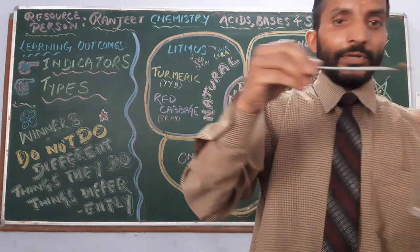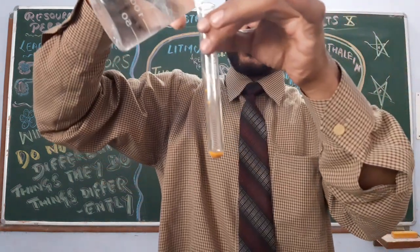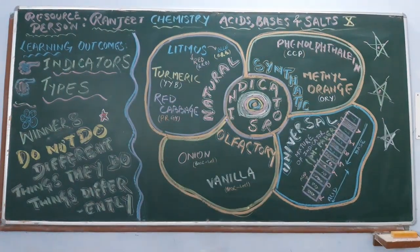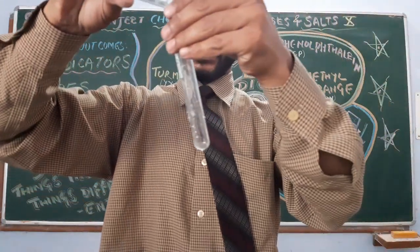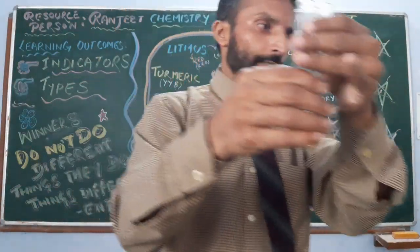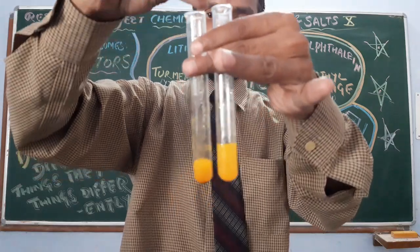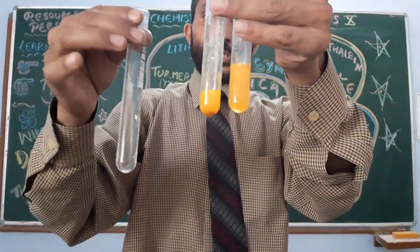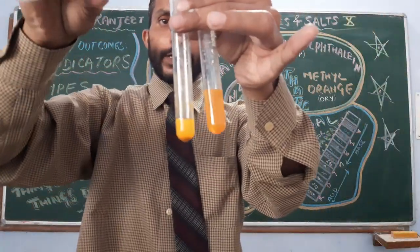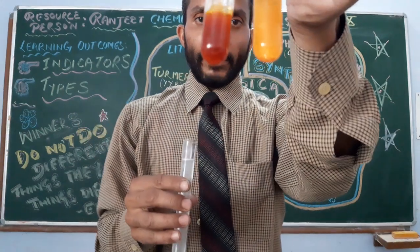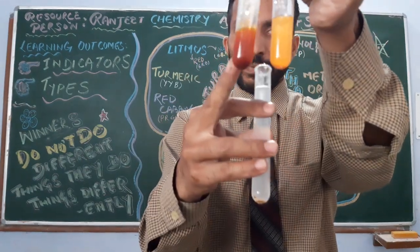I am having turmeric — yellow colour. I will dissolve it in water. It is yellow. I divide it into two parts to see the change. In acid — no change; I have added acid and there is no change. Now I will add base — wow, it becomes brown, reddish brown. In acid: yellow; in base: brown.